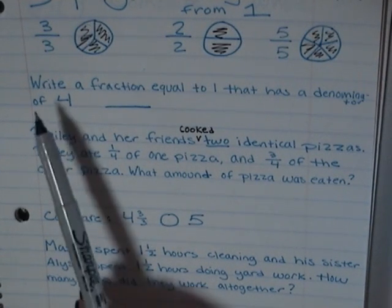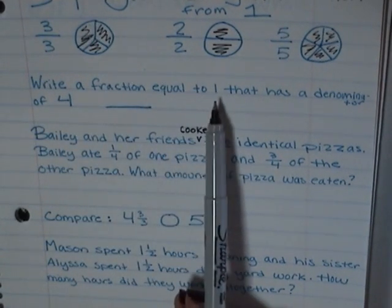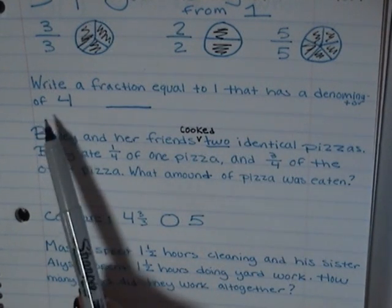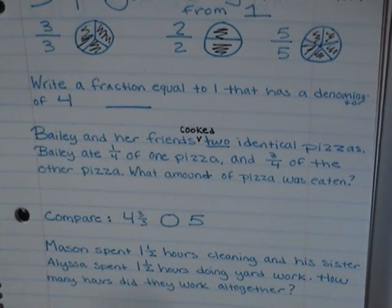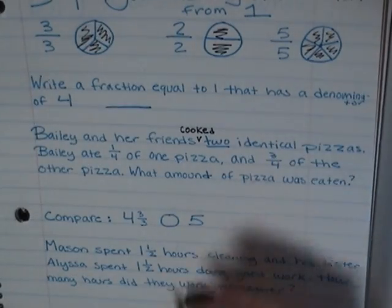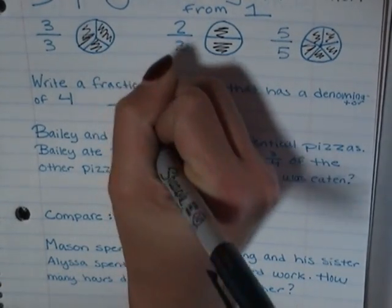Alright. Write a fraction equal to one that has a denominator of four. Well, we know that the denominator is the bottom half of the fraction, so I'm going to go ahead and write a four in there.